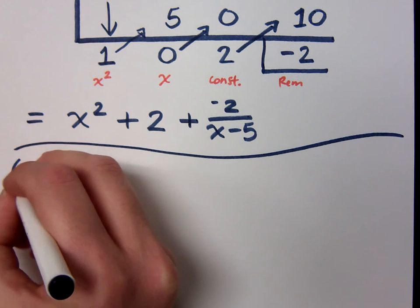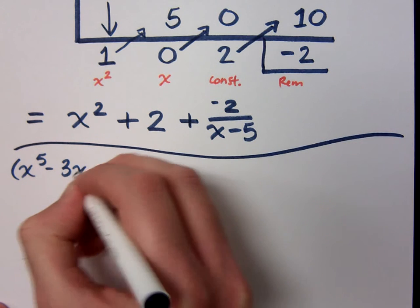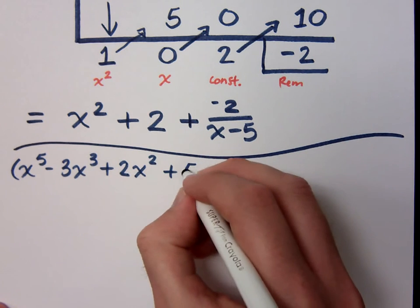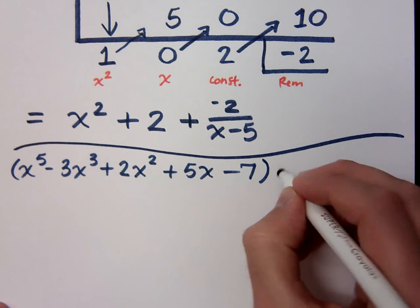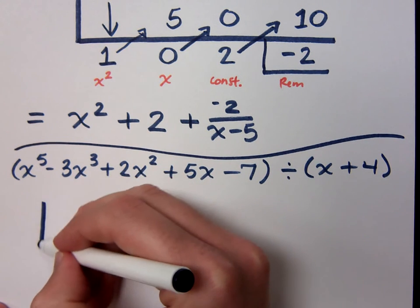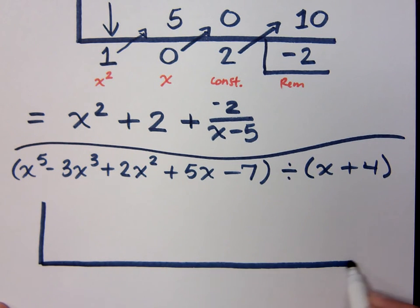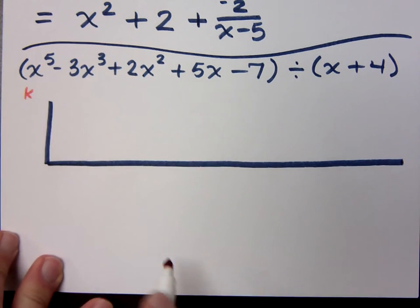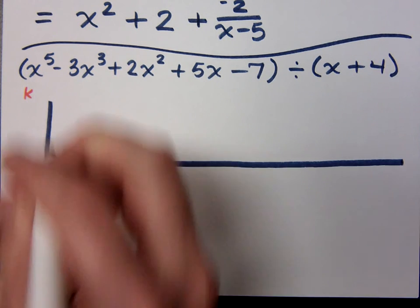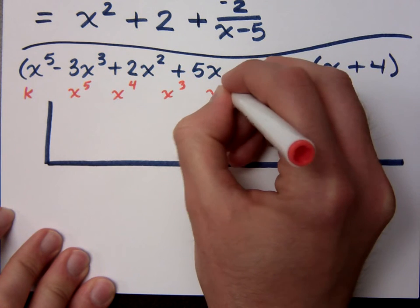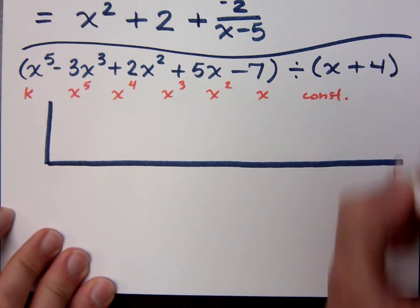Let's try this one. I hope I have enough room. x to the fifth minus 3x to the third plus 2x squared plus 5x minus 7 is divided by x plus 4. Give yourself enough room here.